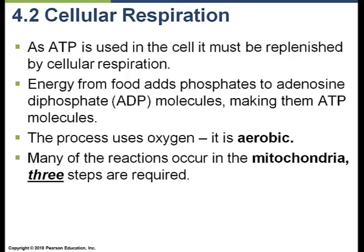Previously we discussed the importance of ATP to the metabolism of a cell. Everything that the cell needs to accomplish in terms of work is accomplished because of the presence of this molecule referred to as ATP. ATP is continually being used up and when it's used up it's turned from ATP into ADP. ADP, adenosine diphosphate, must be replenished and transformed back into ATP in order for the cell to survive.